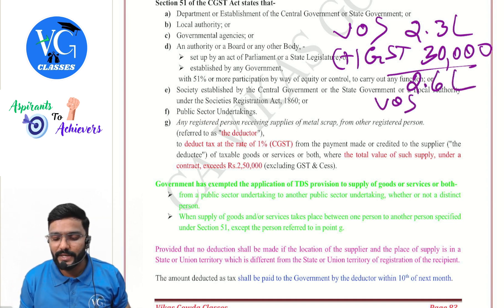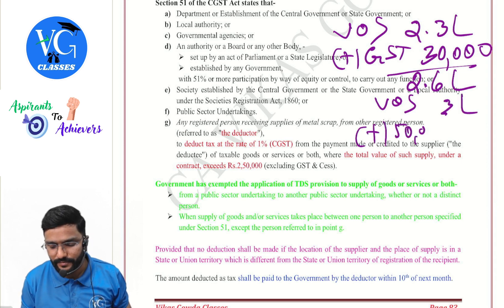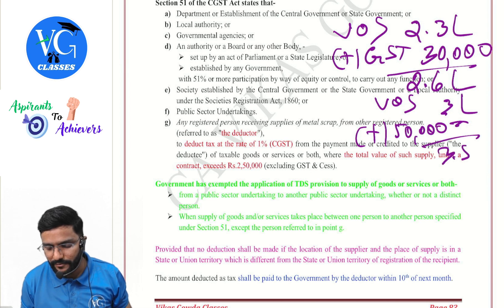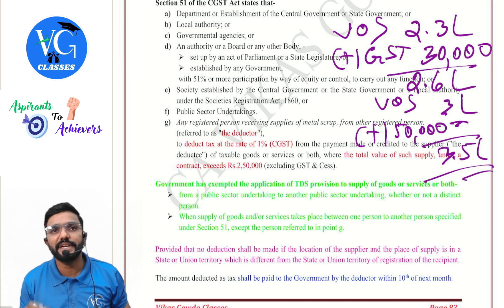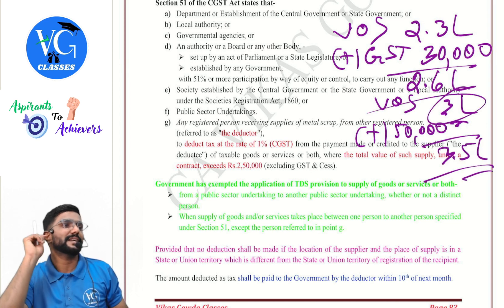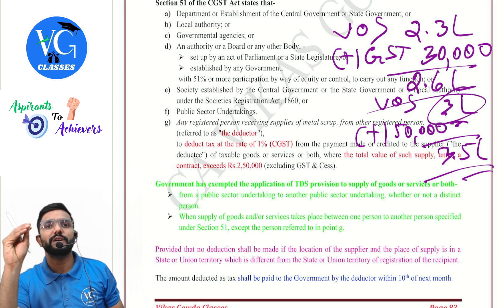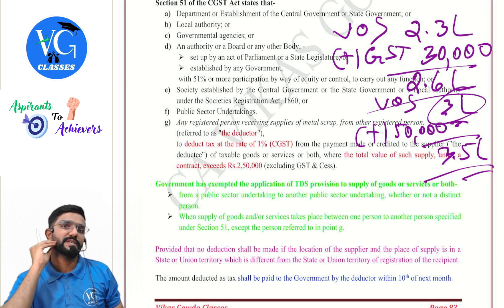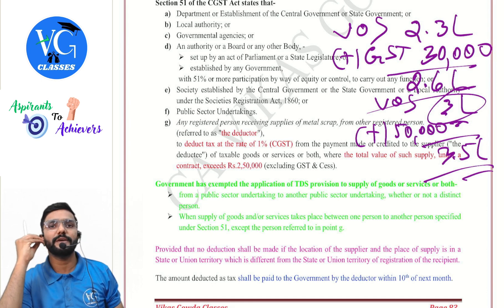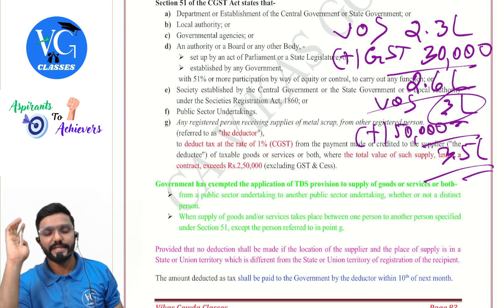Next example: value of supply is ₹3 lakh plus GST of ₹50,000, totalling ₹3.5 lakh. Should we deduct TDS? Yes. On what amount? On ₹3 lakh — TDS has to be deducted on the value of supply only. How much? 1% CGST and 1% SGST. Or if it is an interstate supply, 2% IGST.